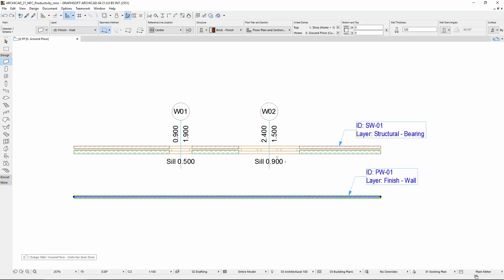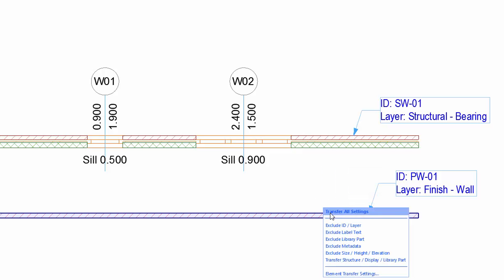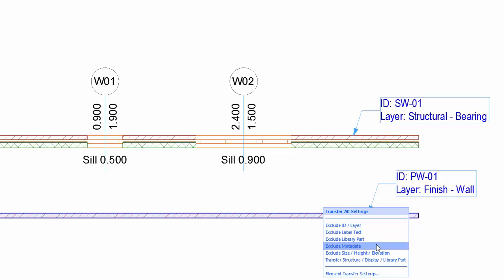Let's undo the changes and repeat adding parameters, but now click the appearing label to expand and show the complete list of sets. Here you can see the available new predefined, so-called Parameter Transfer Sets.